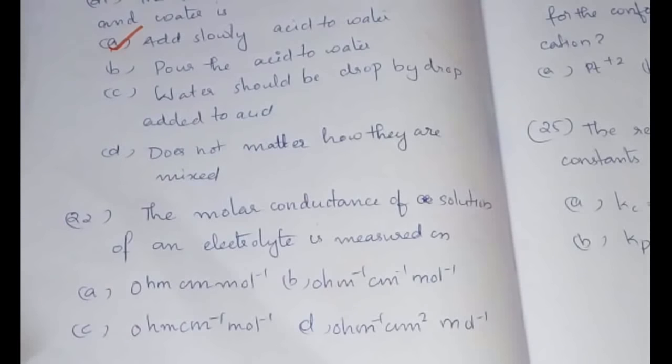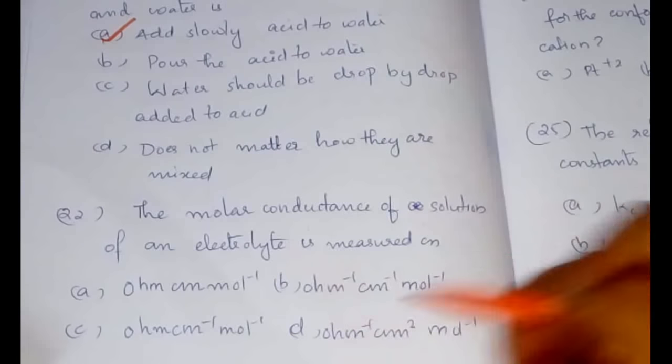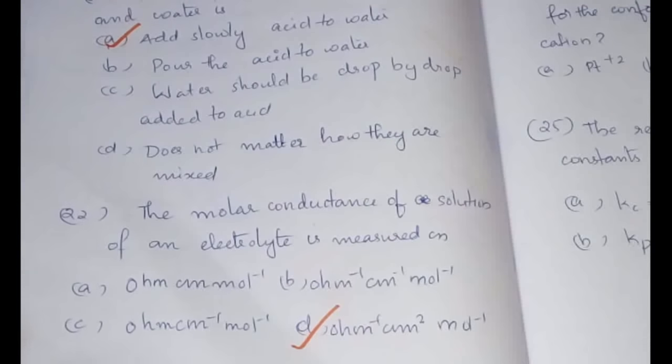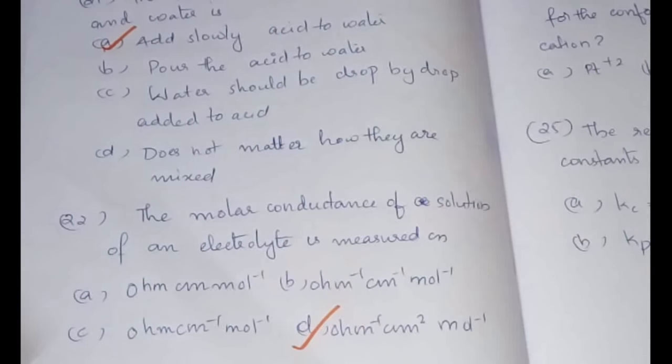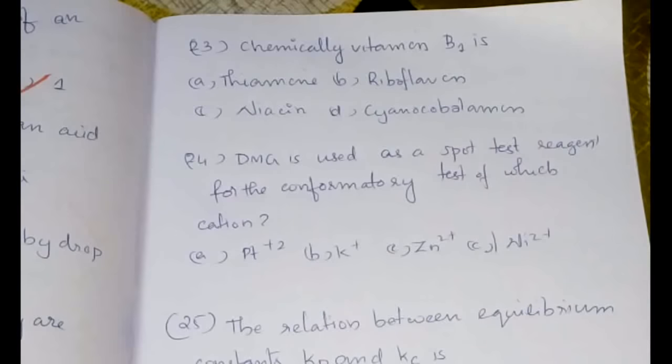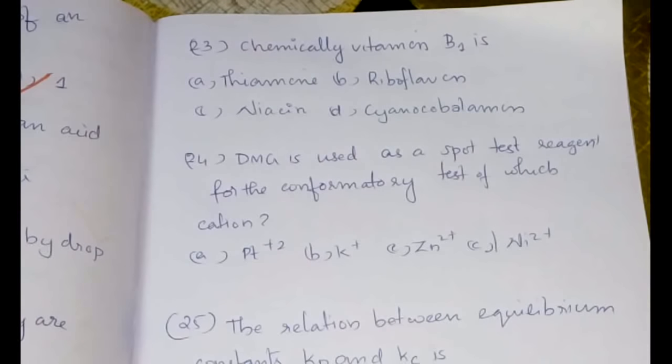Now, the 22nd question: the molar conductance of a solution of an electrolyte is measured in option D—per ohm centimeter squared per mole. This is also a simple question.